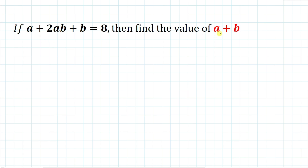We are asked to find the sum of variables a plus b. Before that we need to find out the values of a and b. So let's just start the solution. We have given a plus 2ab plus b equals to 8.